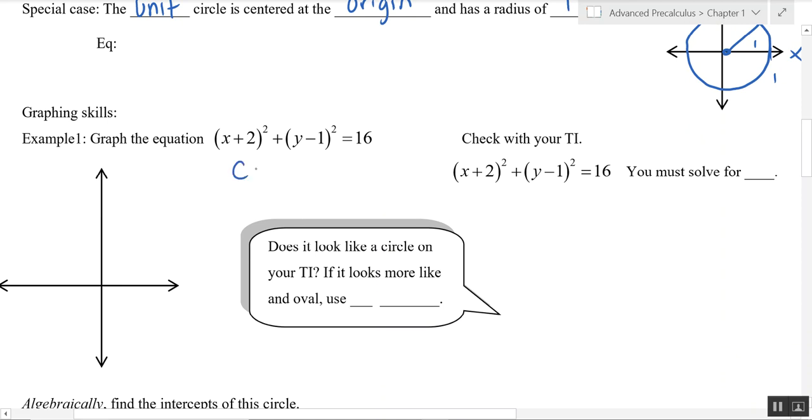Says graph the equation X plus two quantity squared plus Y minus one squared is equal to 16. You should be able to identify the center fairly quickly. And remember, it's X minus H and Y minus K. So our center is the point negative two, one. And our radius is the square root of 16 or four.